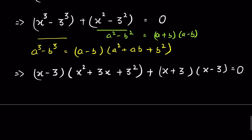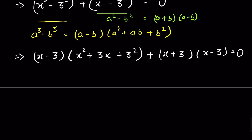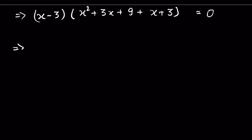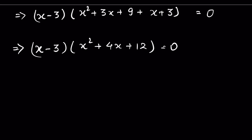Now (x - 3) is the common factor. Factoring it out, the remaining terms are (x² + 3x + 9) + (x + 3), which combine to give x² + 4x + 12. So the equation becomes (x - 3)(x² + 4x + 12) = 0.